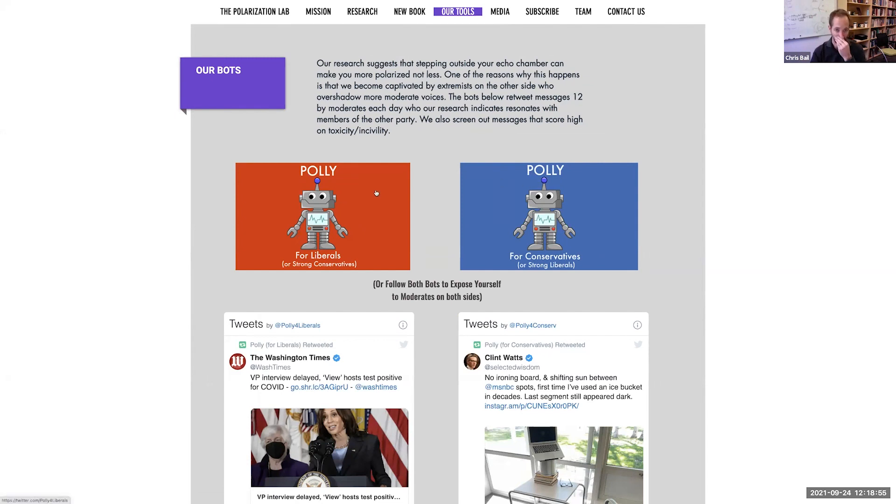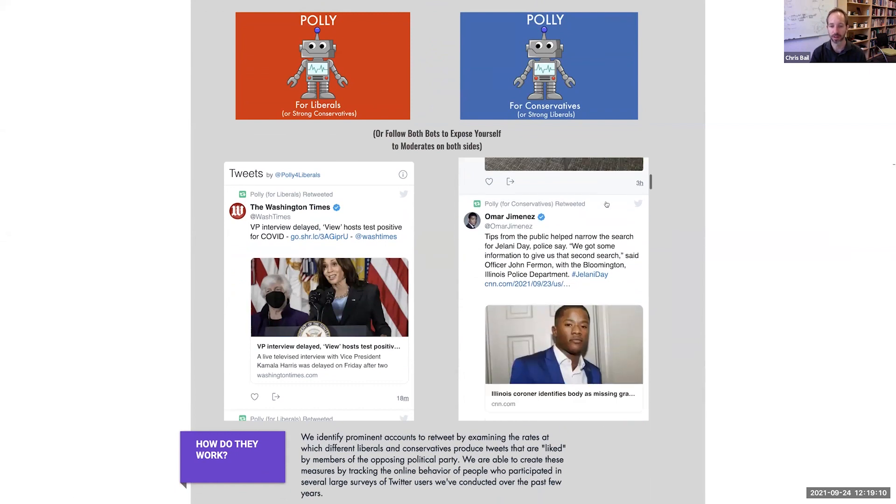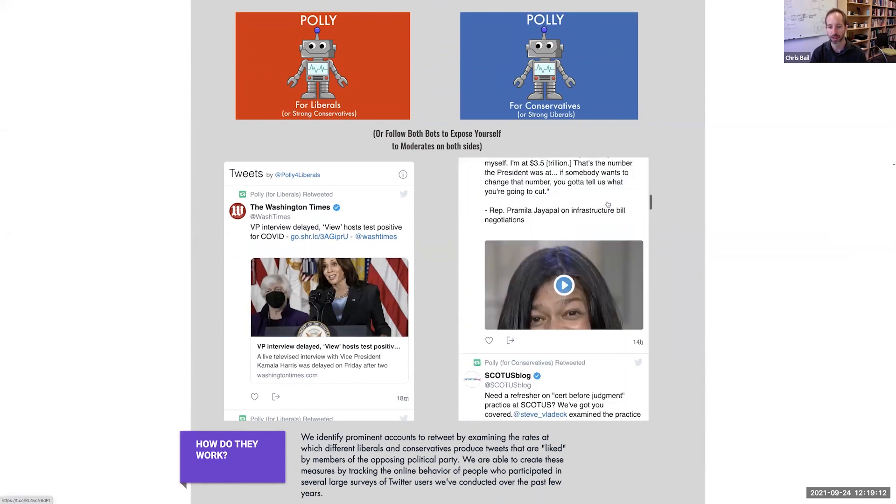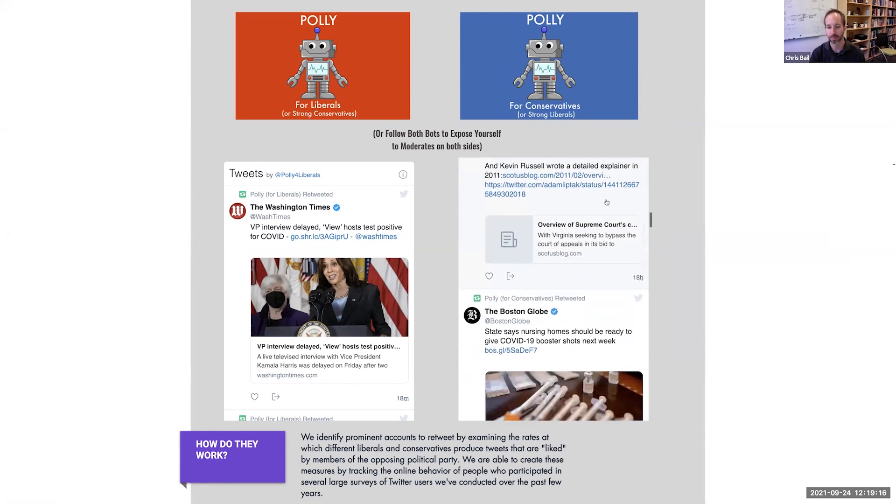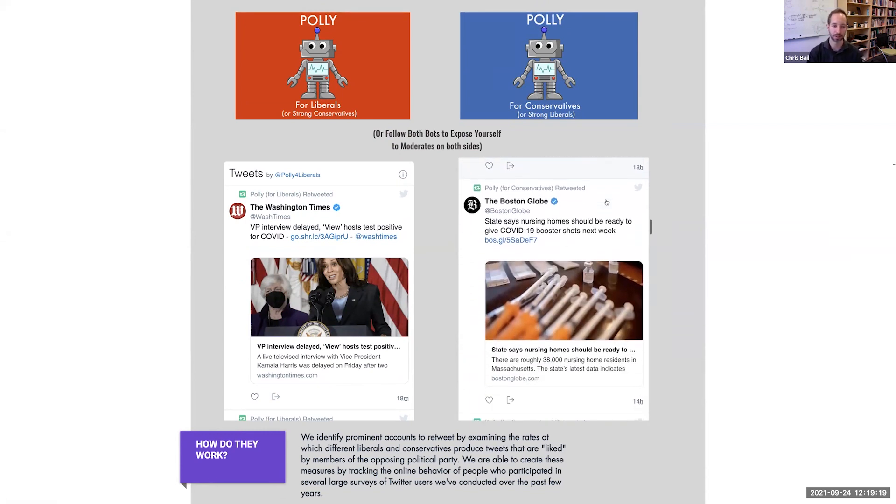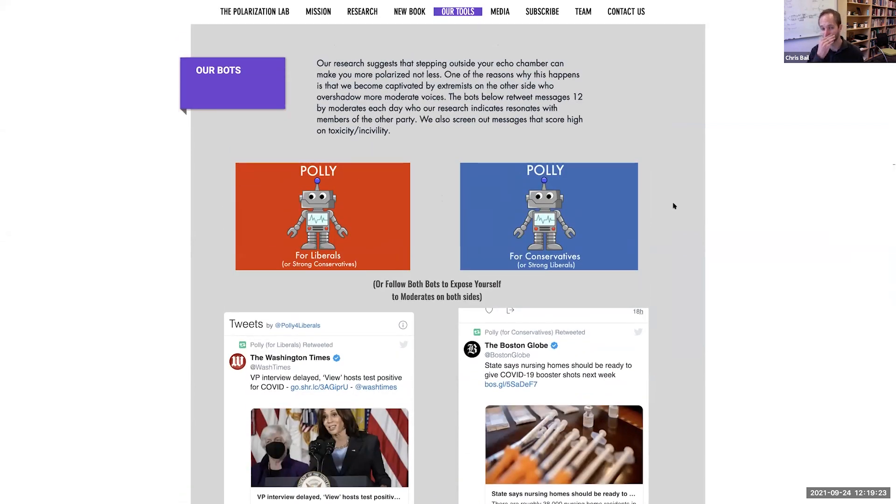If you're on the left, you can follow the conservative Poly. If you're on the right, you can follow the liberal Poly. If you're kind of in between, you can follow both and try to expose yourself to what we think is the middle of American politics. It might surprise you, the type of stuff that comes on here—not always from the sources you expect. Sometimes it will be CNN, sometimes it might be Fox News.